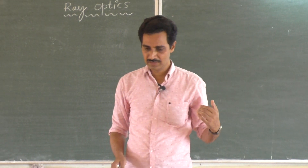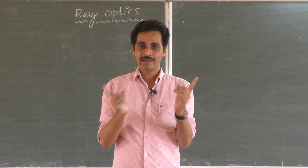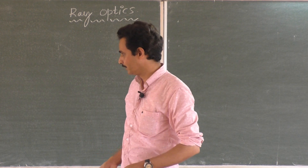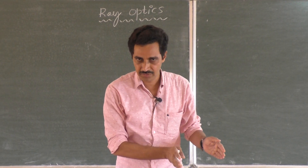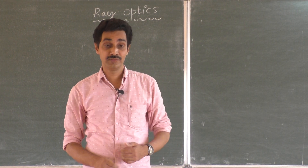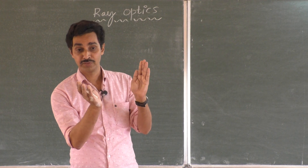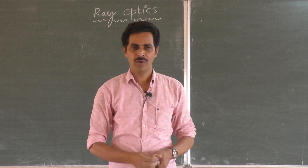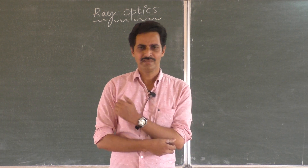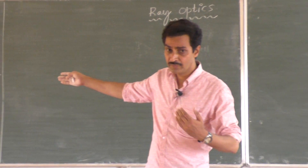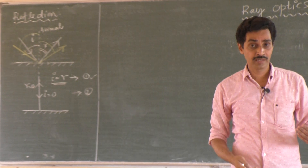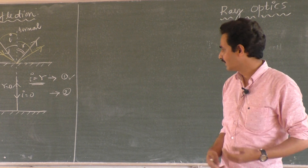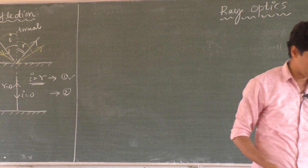In a plane mirror, the image is the same size as the object, laterally reversed but erect — not inverted — virtual, and formed at the same distance as the object inside the mirror. Now we will enter into the actual syllabus. We have curved mirrors — the outside part of a spoon, inside part of a spoon, the vehicle mirror used for observing rear objects — all these are curved mirrors. The laws of reflection are followed even in curved mirrors. Wherever there is reflection, angle of incidence equals angle of reflection, and incident ray, reflected ray, and normal all lie in the same plane.